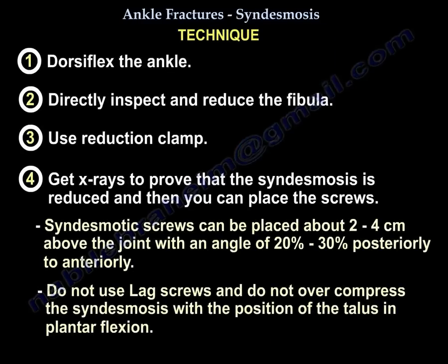You're going to dorsiflex the ankle. You're going to directly inspect and reduce the fibula. You're going to use a reduction clamp and get x-rays to confirm the syndesmosis is reduced. Then you're going to place the screws about two to four centimeters above the joint at an angle of 20 to 30 degrees, posteriorly to anteriorly. Do not use lag screws and do not over-compress the syndesmosis.